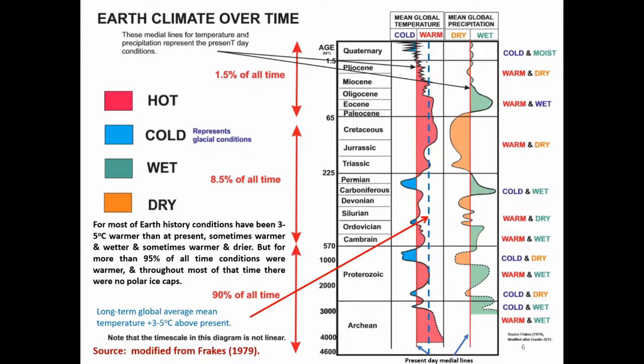A point to notice on the charts along the left-hand margin is that the age or time axis is not of constant scale. Portions have been compressed or extended to highlight important features in that interval.